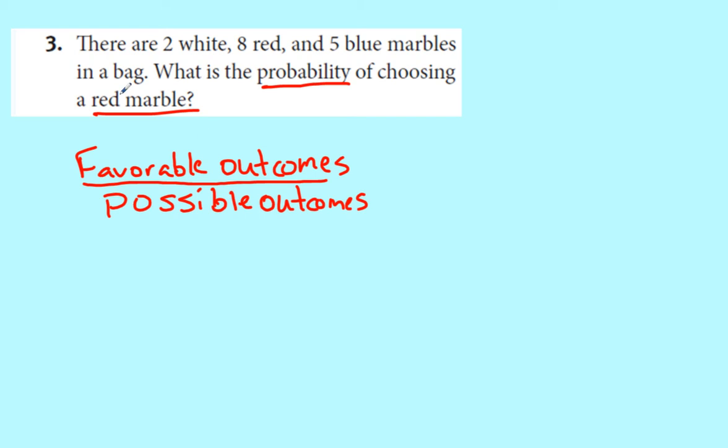So in this case, what we want to have is a red marble, of which there are eight. So there are eight favorable outcomes, and then possible outcomes is everything, anything that could happen. So there's two white, eight red, and five blue. That is a total of fifteen possible outcomes. And when you're writing probability, unless they talk about percents, your answer is generally going to be written in a simplified fraction, just like that.